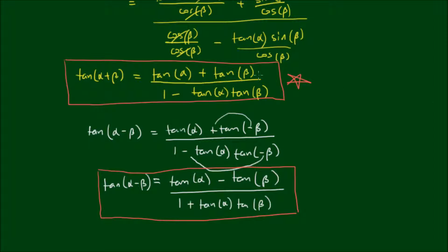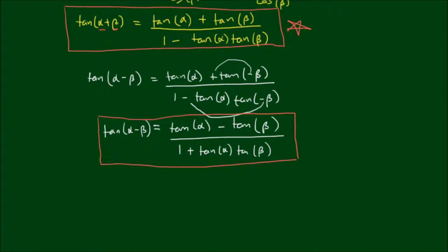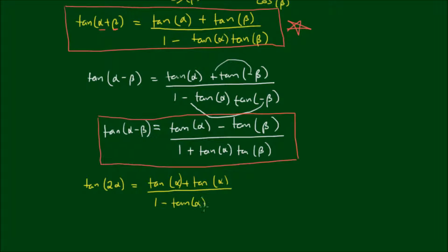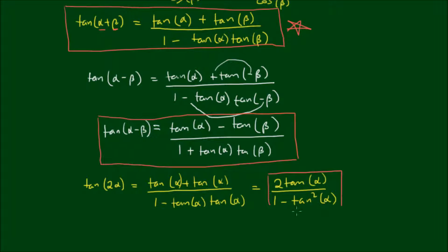And we can further use this result. So let's say that alpha and beta are equal to each other, in which case we will have tan alpha plus tan alpha on the top, and this gives us 2 times tan alpha on the top over 1 minus tan squared alpha on the bottom. And this is another handy identity to remember.